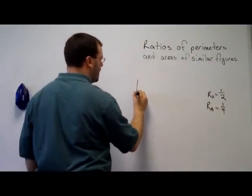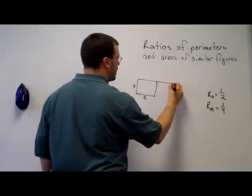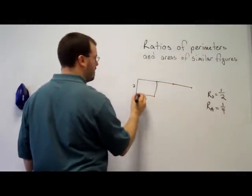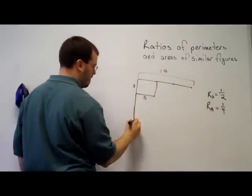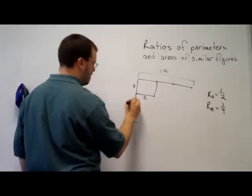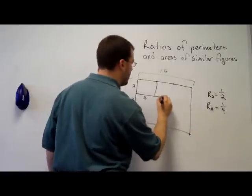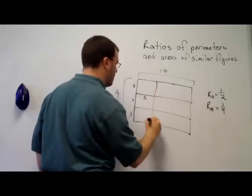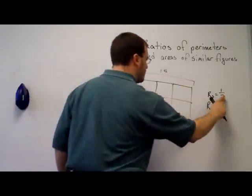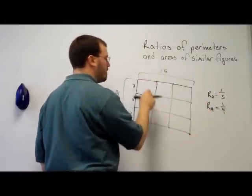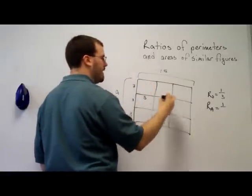So if we start with a 3 by 5 picture, and we triple it, 9 by 15. By tripling the side lengths, our ratio of the sides from the smallest to the whole thing is 1 to 3. Our areas, this is only 1 ninth of the area.